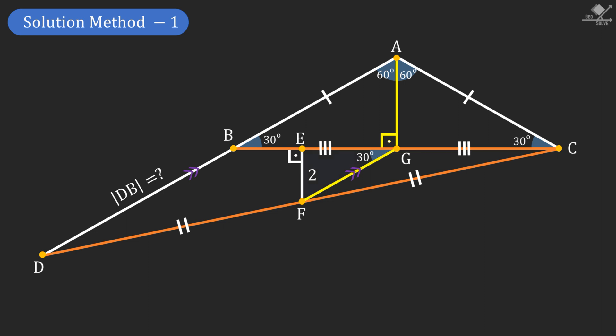Now we have a 30-60-90 triangle here and the hypotenuse will be two times the length of the line segment opposing 30 degree angle. So line segment FG will be 4 units.